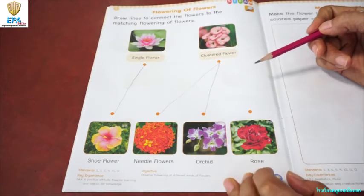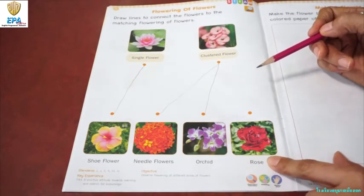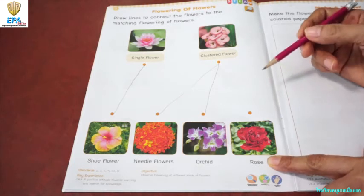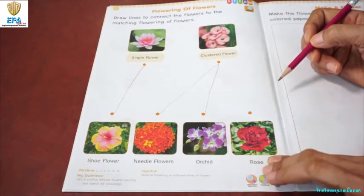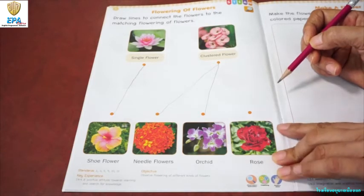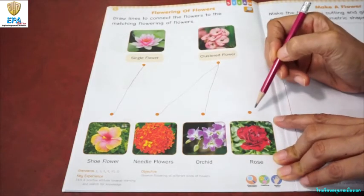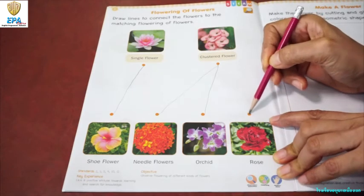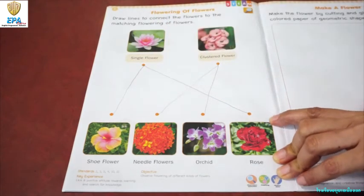And then we have here a rose. Is the rose a clustered flower? No, it is a single flower. So you have to draw a line from this point up to this point.